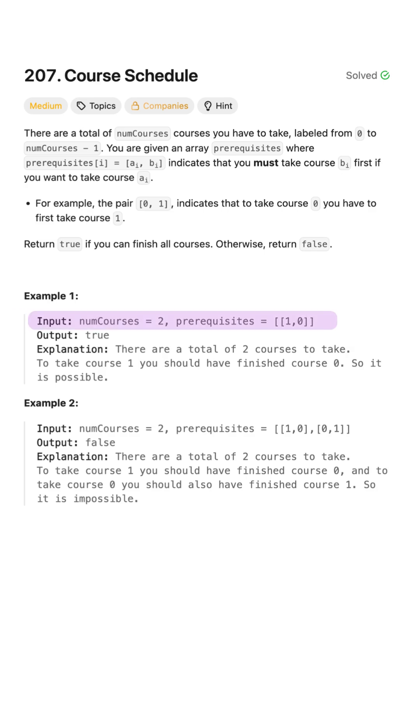We are given a total number of courses and a list of prerequisites. Each pair, like 1 and 0, means that to take course 1, you must first complete course 0. We need to return true if we can finish all the courses, else return false.